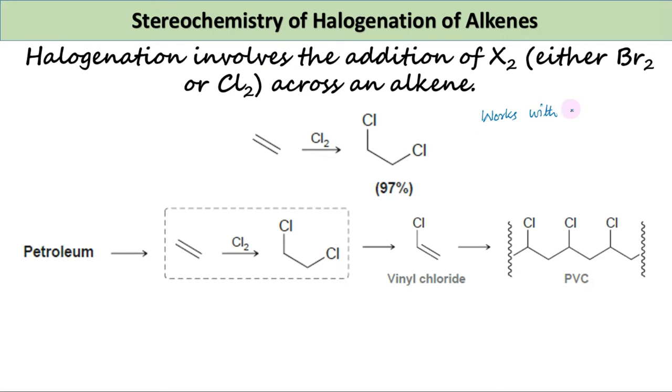Halogenation of alkenes is only practical for the addition of chlorine or bromine. The reaction with fluorine is too violent, and the reaction with iodine often produces very low yields.